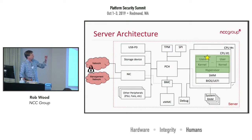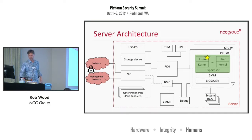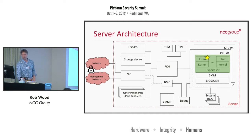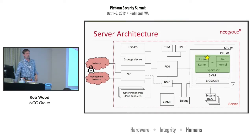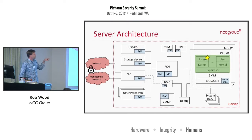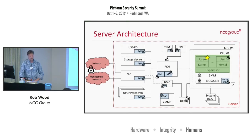In the green box is the software stack we're all very familiar with — the hypervisor, OS, and application stack. The yellow star is your core asset you're trying to protect, like a customer database running in your cloud environment. To get from where the attacker is to where that yellow star is, we need to recognize that all of these systems are running firmware — they're all individual computers doing their thing, and all of them are attackable.